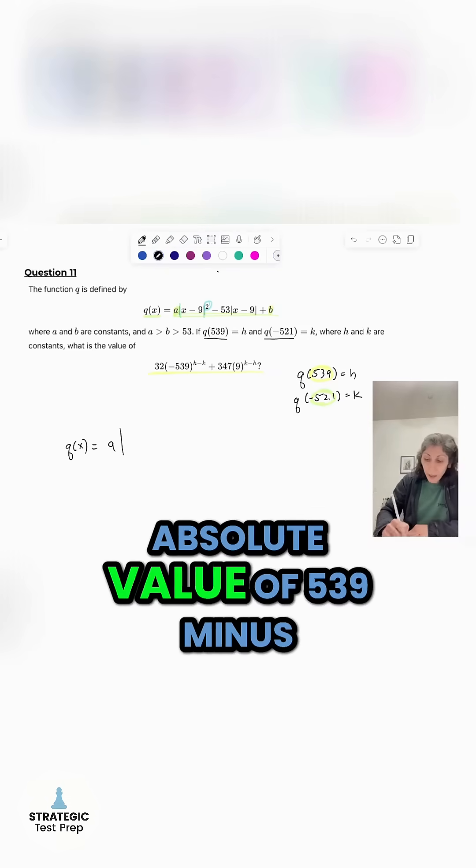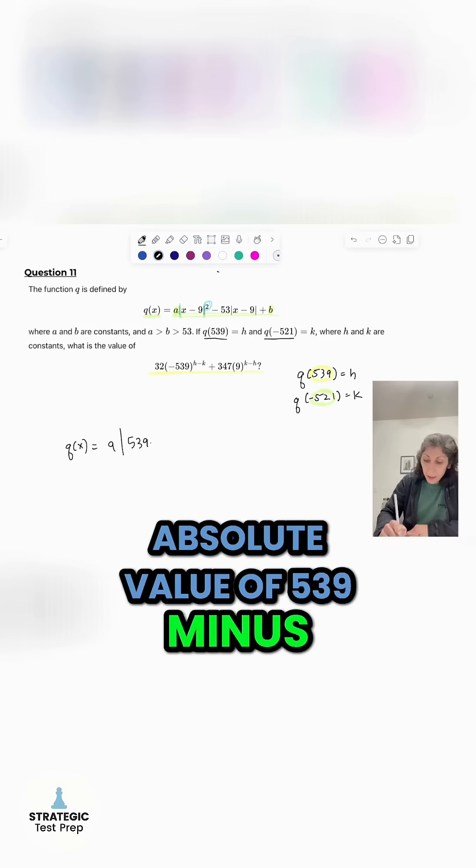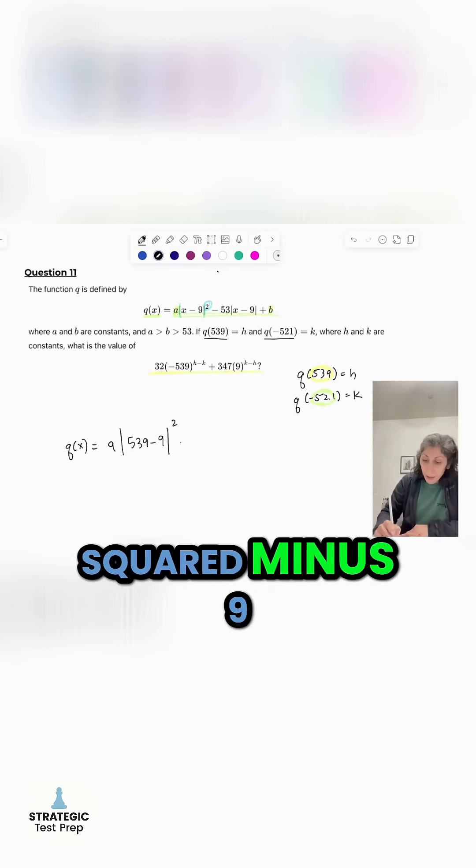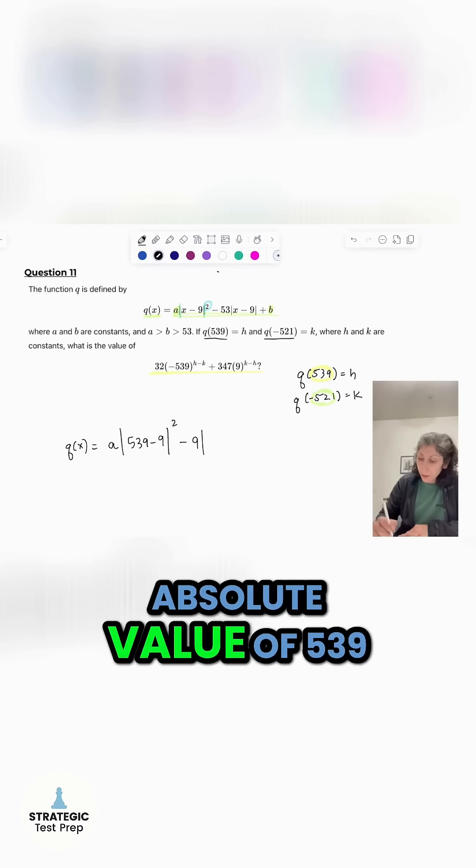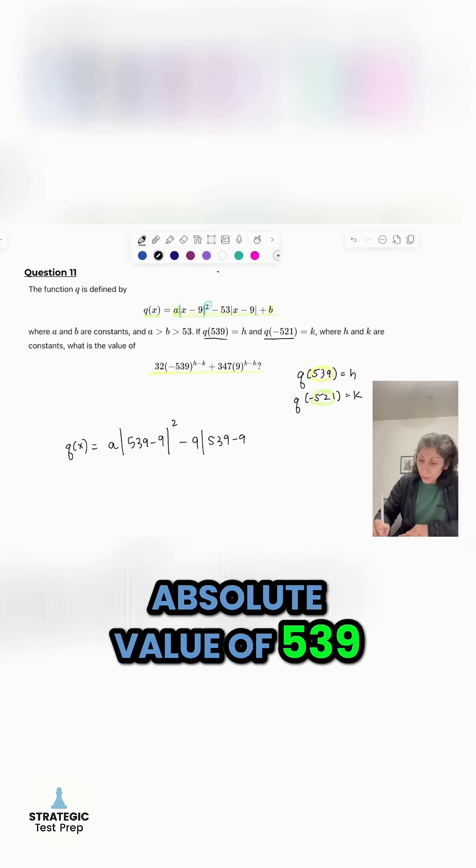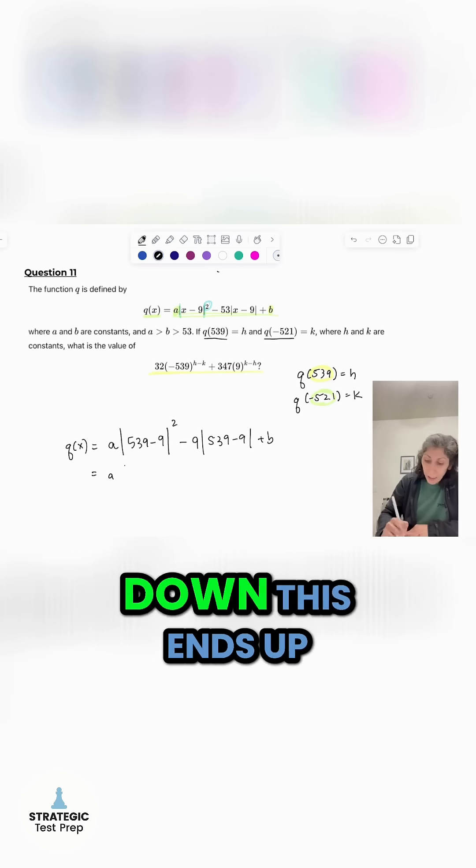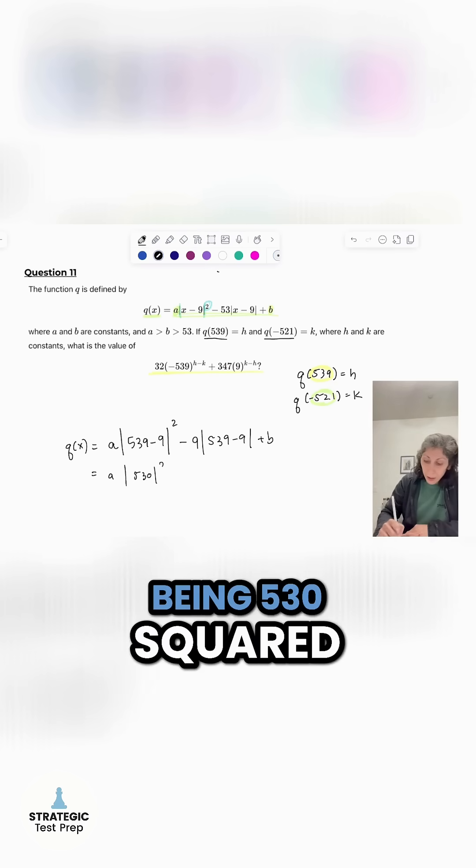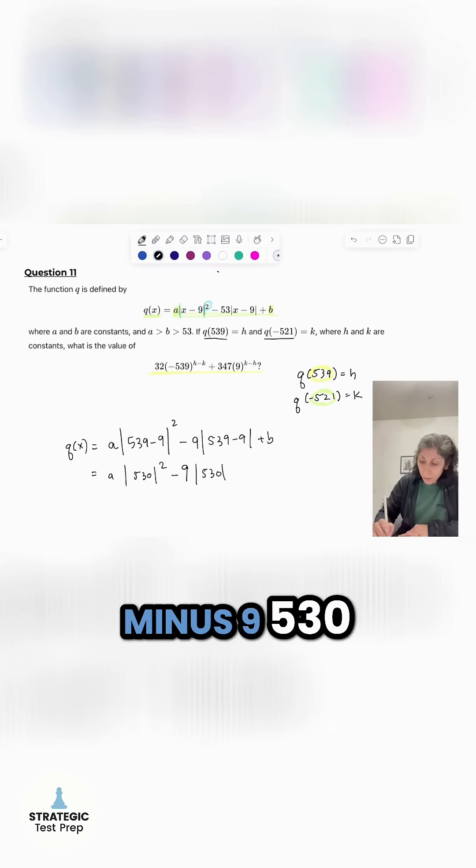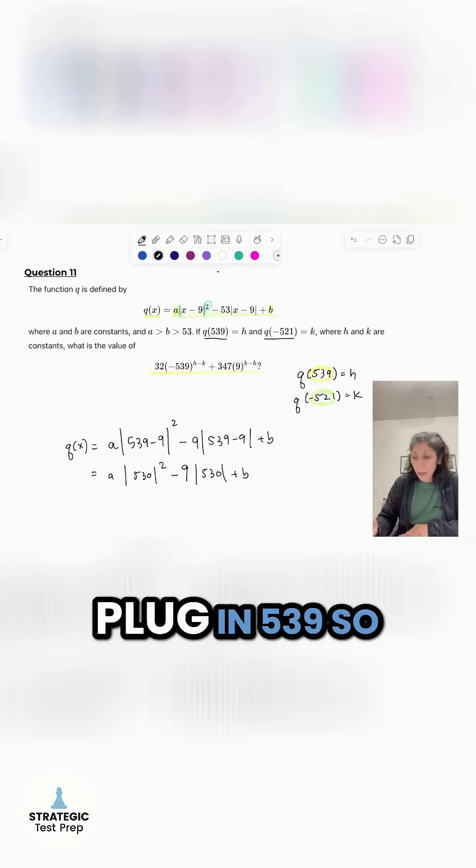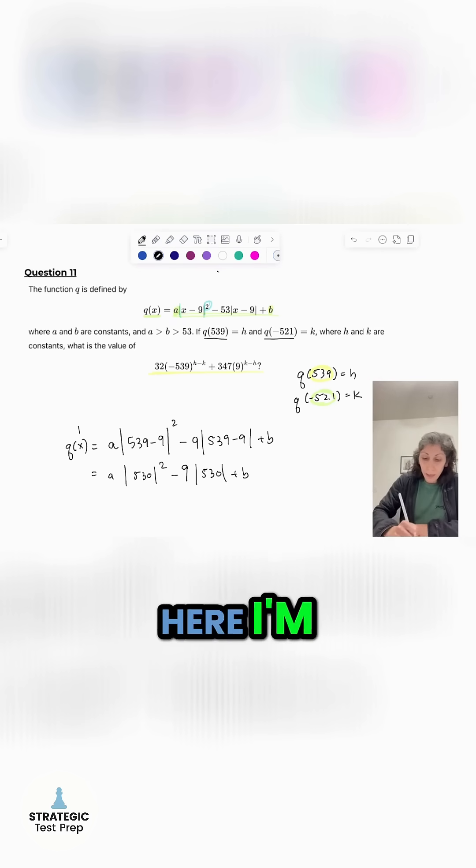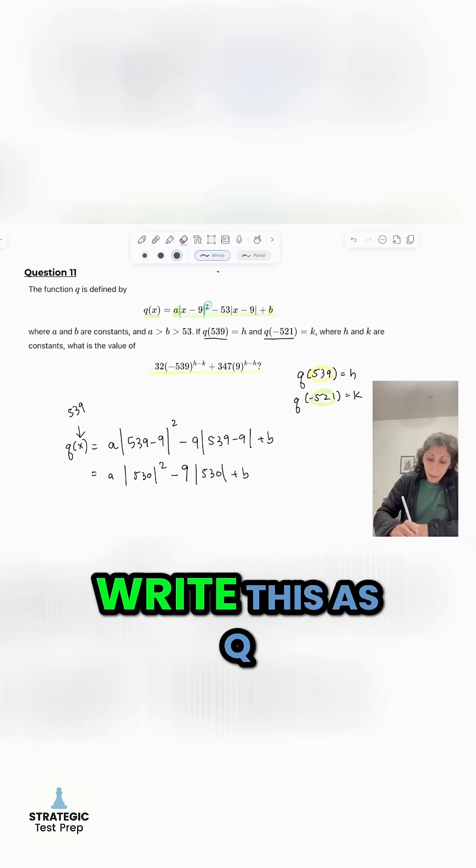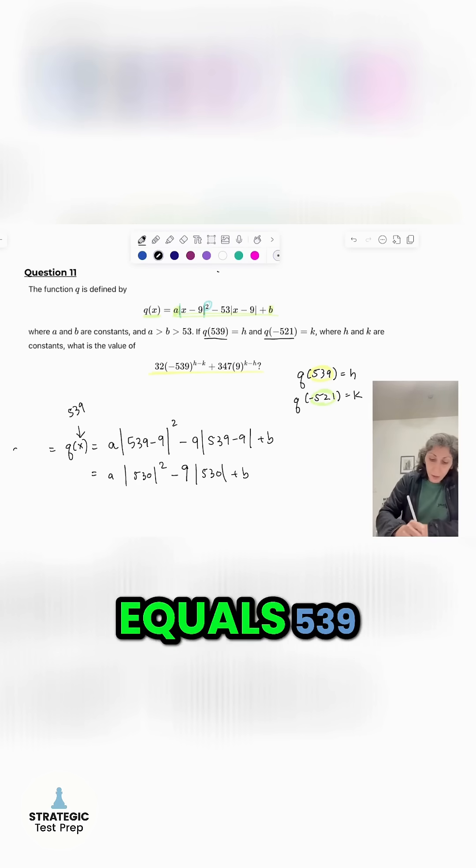So we'll say A absolute value of 539 minus 9 squared minus 9 absolute value of 539 minus 9 plus B. If I simplify this down, this ends up being 530 squared minus 9, 530 plus B. So that's what this one is when I plug in 539. So here I'm actually substituting in 539 for X. So I should actually write this as Q equals 539.